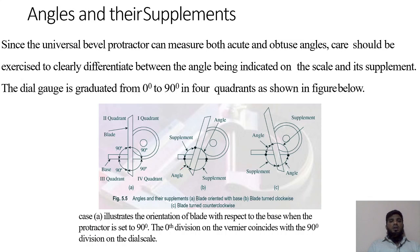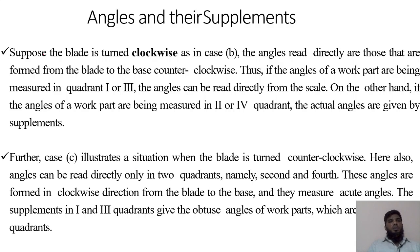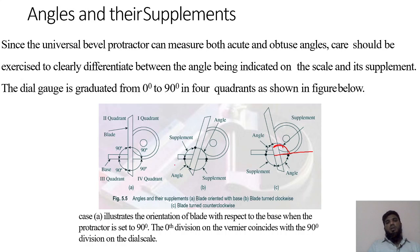The orientation of the blade with respect to the base is said to be 90 degrees in this configuration. When measuring angles, the blade is oriented from the surface to the base. The angle and its supplement must be distinguished. If the blade is turned clockwise, angles are read directly from the blade to the base in the counterclockwise direction. If angles are in quadrants one and three, they can be read directly. If in quadrant two or four, you must find the supplement.